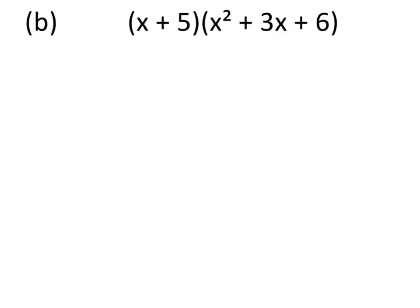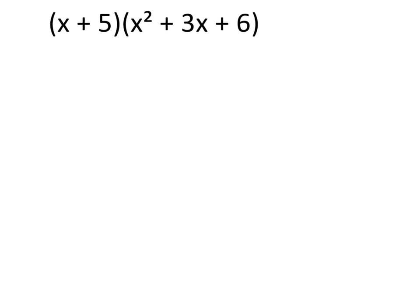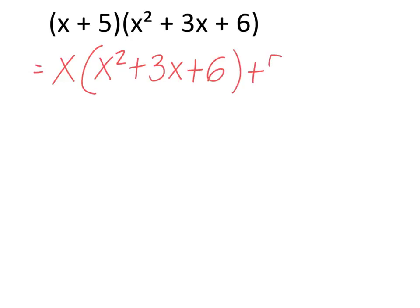Question 2b is another double bracket question: we multiply x plus 5 by the second bracket, x squared plus 3x plus 6. We break the first bracket up — x from the first bracket multiplies the second bracket (x squared plus 3x plus 6), and then the positive 5 from the first bracket multiplies the second bracket again.